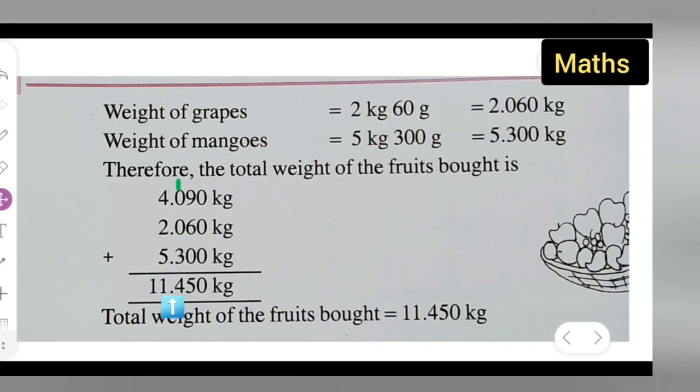So it will be 11.450 kg. Total fruit, how many kg he brought? 11.450 kg. So total weight of the fruits bought is equal to 11.450 kg. I hope you have understood how to solve the given word problem.